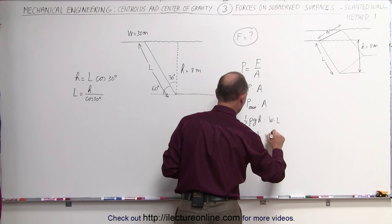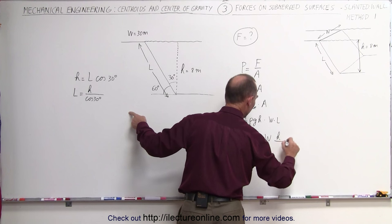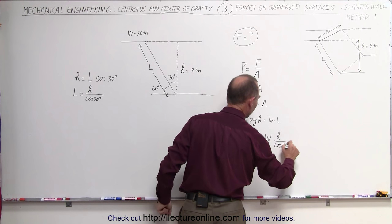times the width of the dam and L can be written as the depth of the water divided by the cosine of 30 degrees. Now all we have to do here is plug in the numbers and see what the total force is.